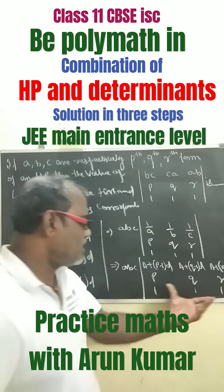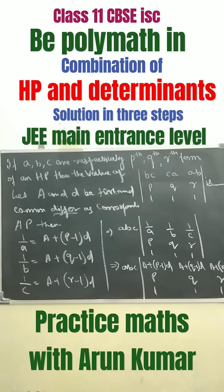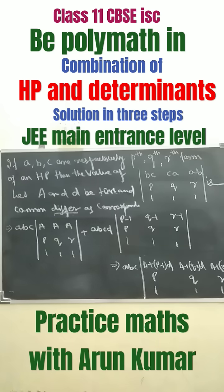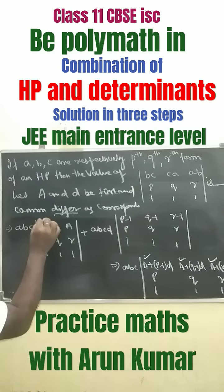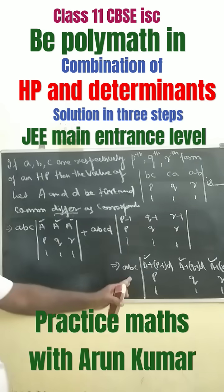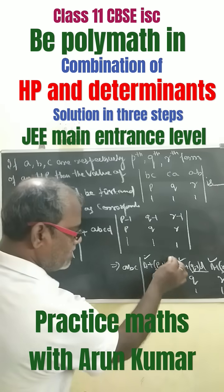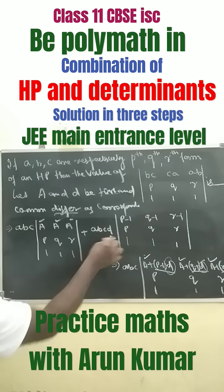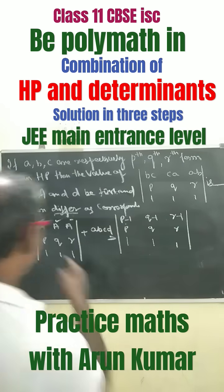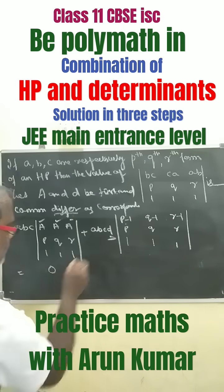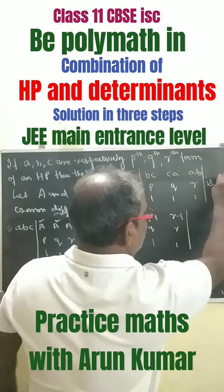Now the next step is we have to split up this determinant. Splitting it up, taking A, A, A and writing here in this form with A, B, C — then taking D common over here and writing the remaining terms. The determinant of this equals 0, then this is 0, this equals 0, so the answer is 0.